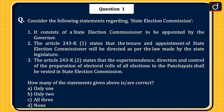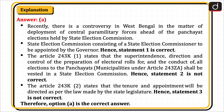The correct answer is Option A, only one. Recently, there was a controversy in West Bengal regarding the deployment of central paramilitary forces ahead of Panchayat elections held by the State Election Commission. The State Election Commission consists of a State Election Commissioner appointed by the Governor — hence Statement 1 is correct. Article 243K(1) states that Superintendence, Direction and Control of Preparation of Electoral Rolls and conduct of all elections to Panchayats and municipalities under Article 243ZA shall be vested in a State Election Commission — hence Statement 2 is not correct. Article 243K(2) states that tenure and appointment will be directed as per the law made by the State Legislature — hence Statement 3 is not correct. Therefore, Option A is the correct answer.